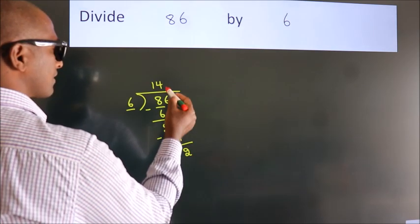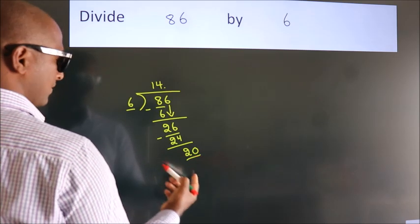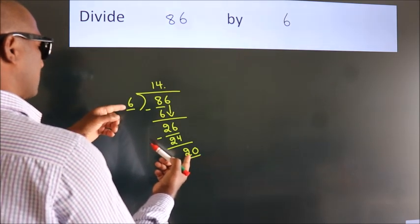So what we do is we put a dot, take zero. So 20. A number close to 20 in the 6 table...